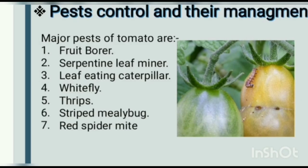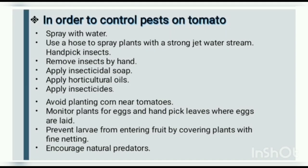Pest control and management: major pests of tomato are fruit borer, serpentine leaf miner, leaf-eating caterpillar, whitefly, thrips, striped mealybug, and red spider mite. To control pests, spray plants with a strong jet of water, hand pick insects, apply insecticidal soap, apply horticultural oils, apply insecticides, and avoid planting corn near tomatoes. Monitor plants for eggs and hand pick leaves where eggs are laid. Prevent larvae from entering fruit by covering plants with fine netting.